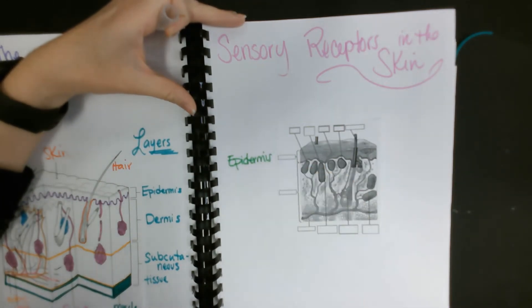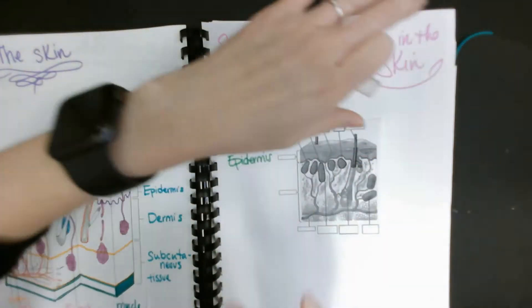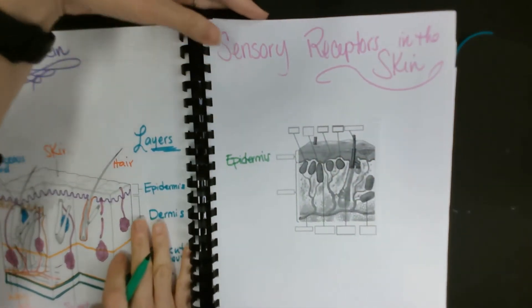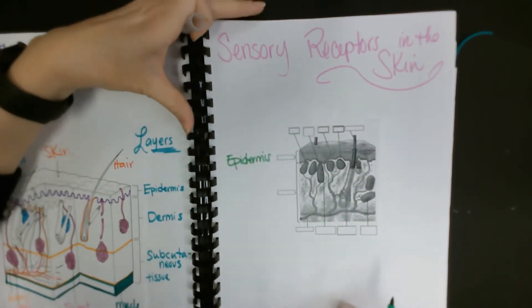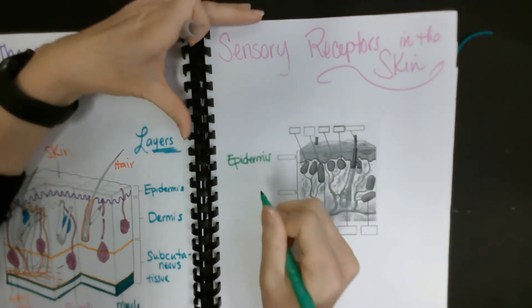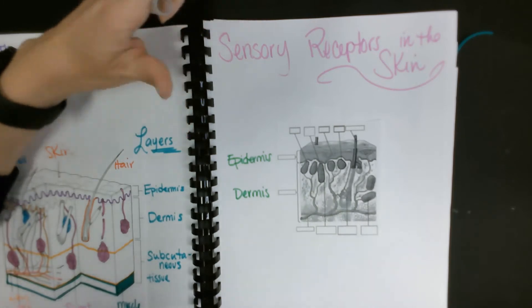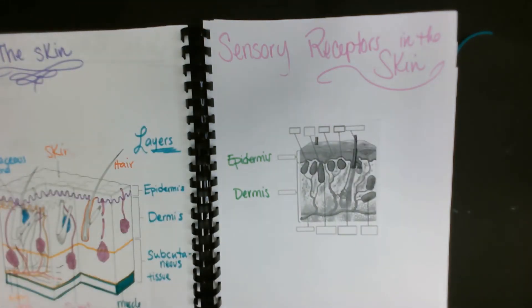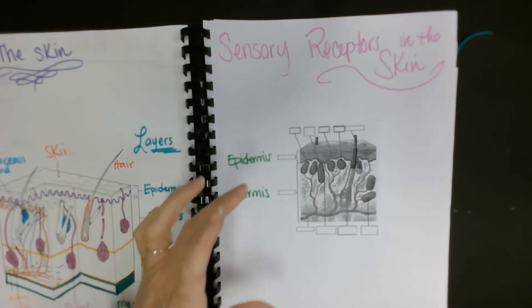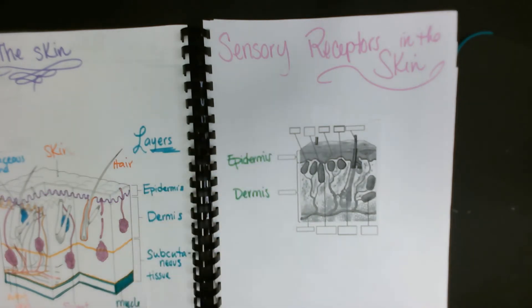That is the top layer of the skin. Your epidermis is showing—it protects everything on the inside. Then you have your dermis, the lower part of the skin. In this area, the dermis area, is where you're going to find these sensory receptors.